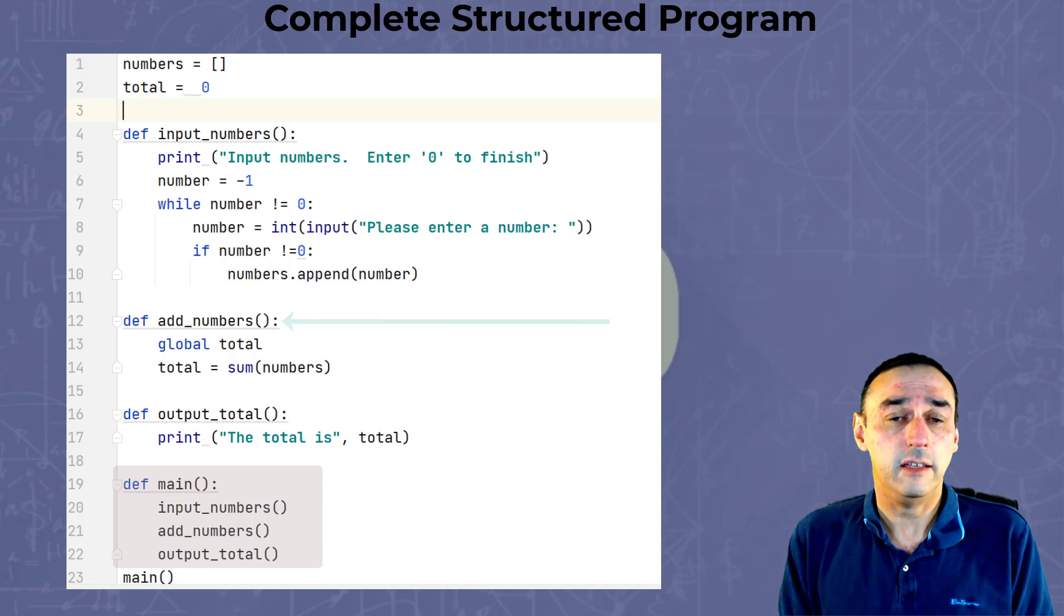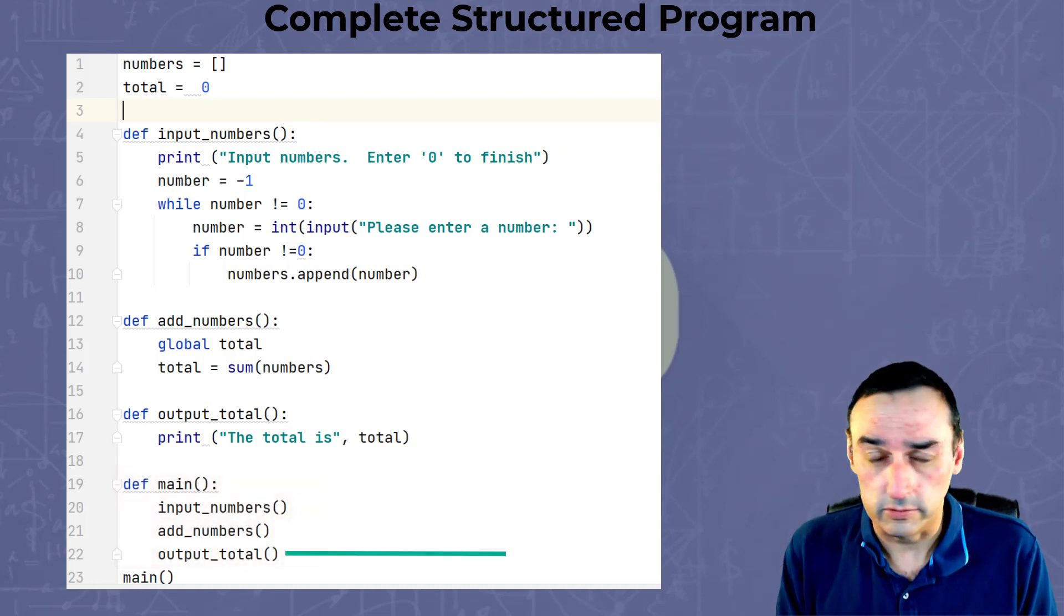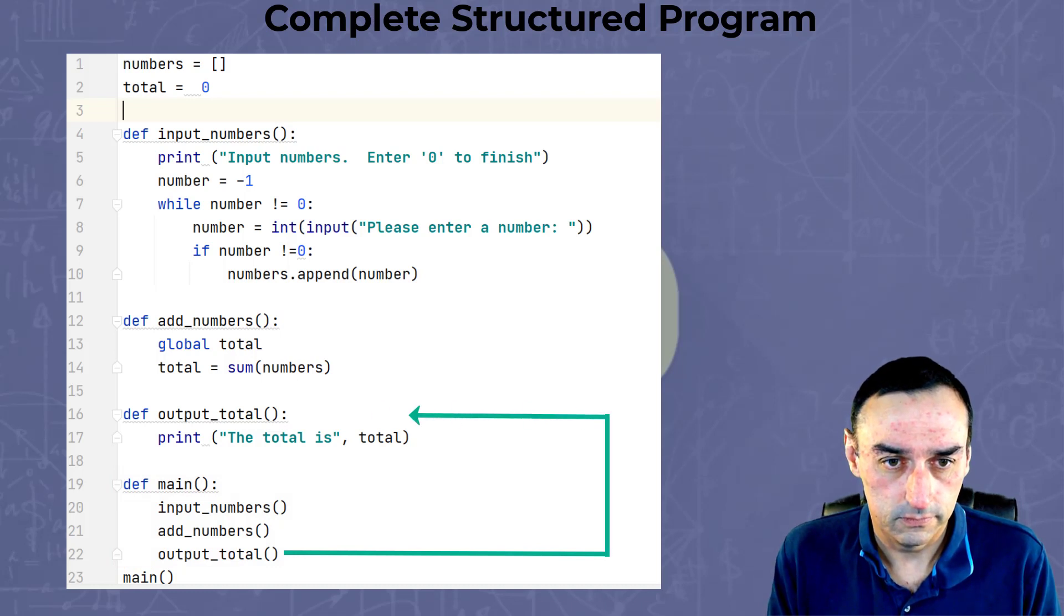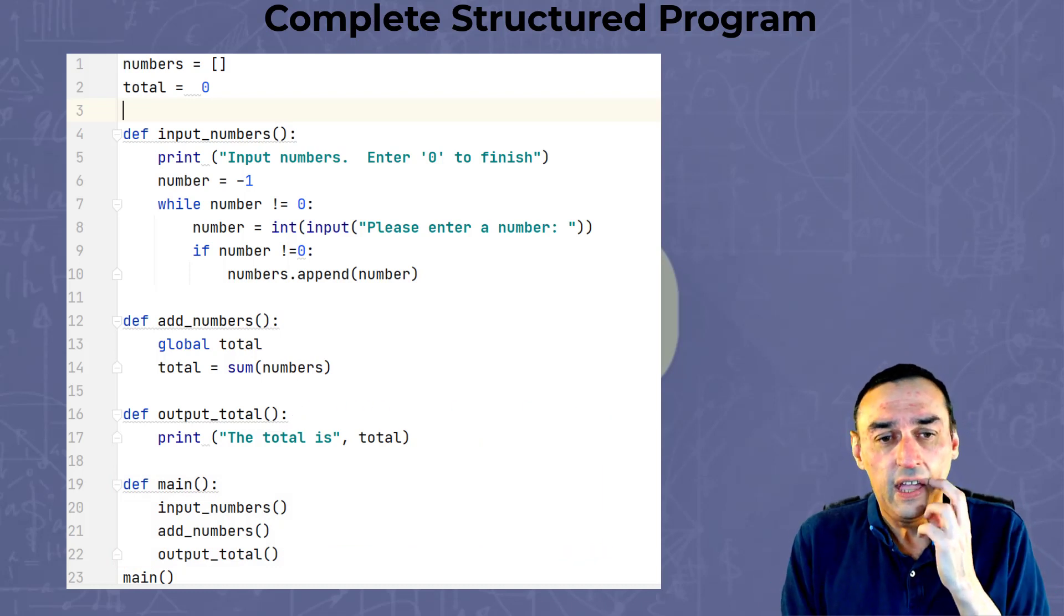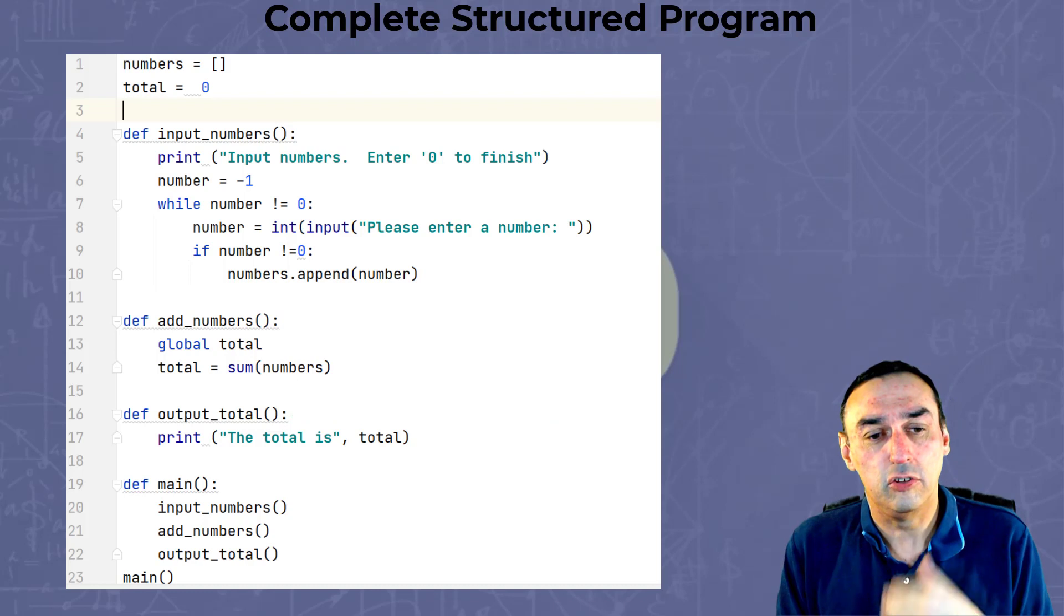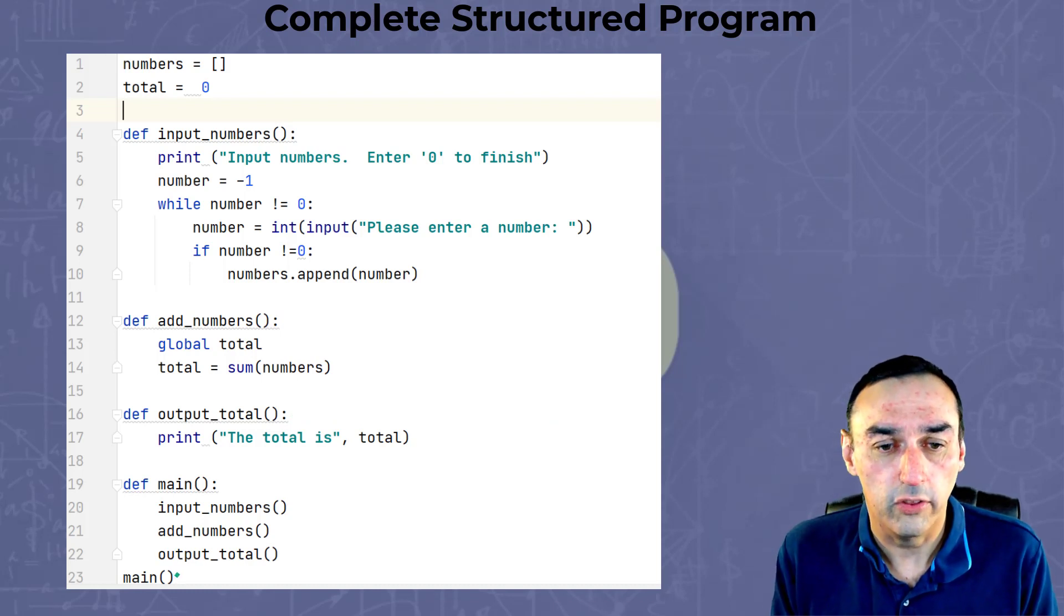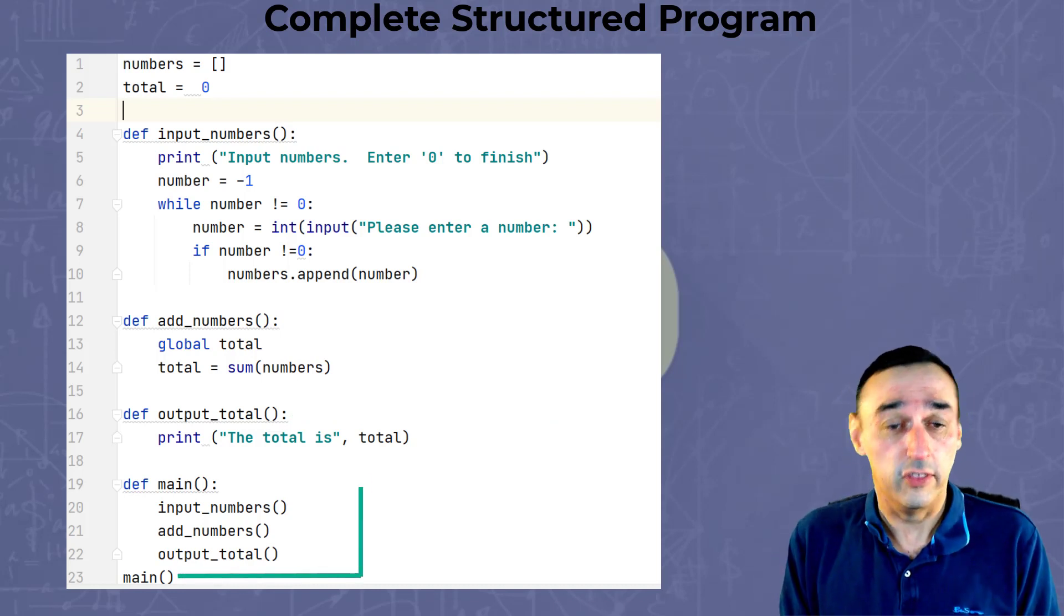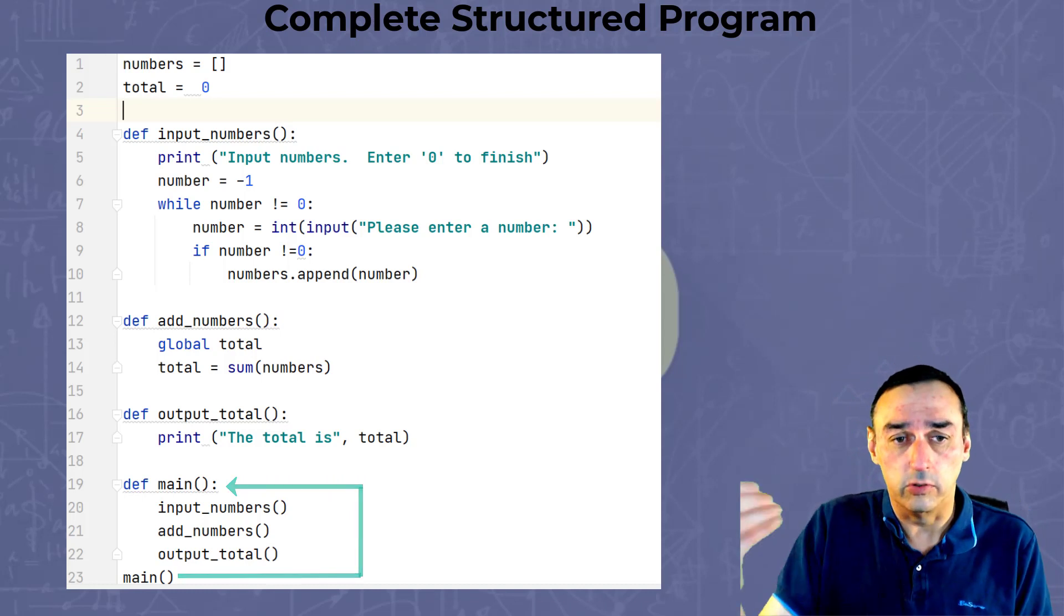And lastly, the total. And then to bring it all together, in the main part of the program, you call the main function, which calls the main function, which in turn will call the other functions.